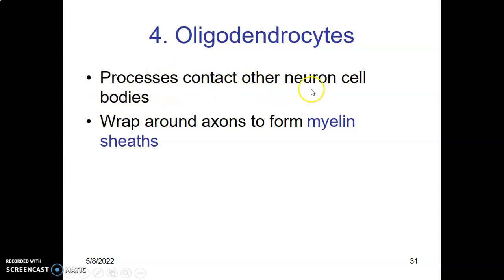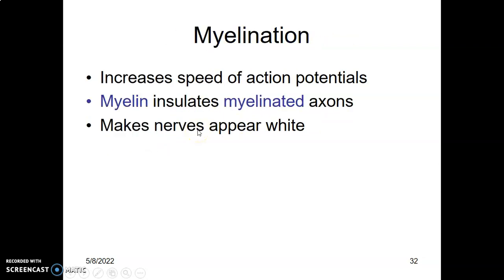Oligodendrocytes contact other neuronal cell bodies and wrap their axons to form myelin sheath in the central nervous system. Myelination is important because it insulates the axons — you don't lose the action potential, you're able to increase the action potential, and myelin makes the nerves appear white.